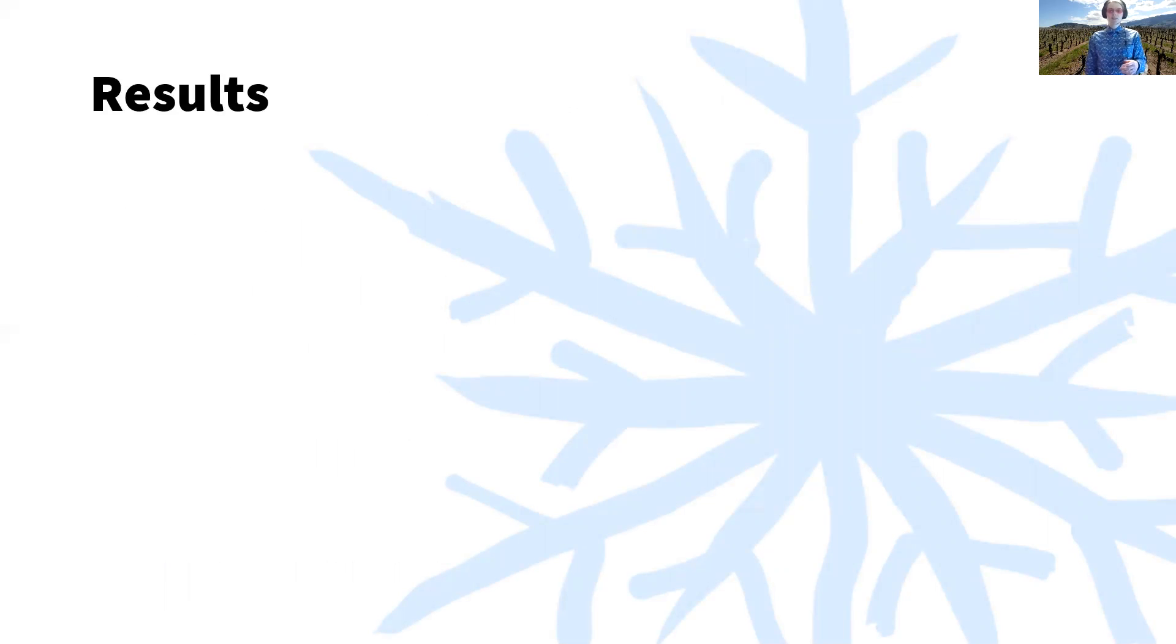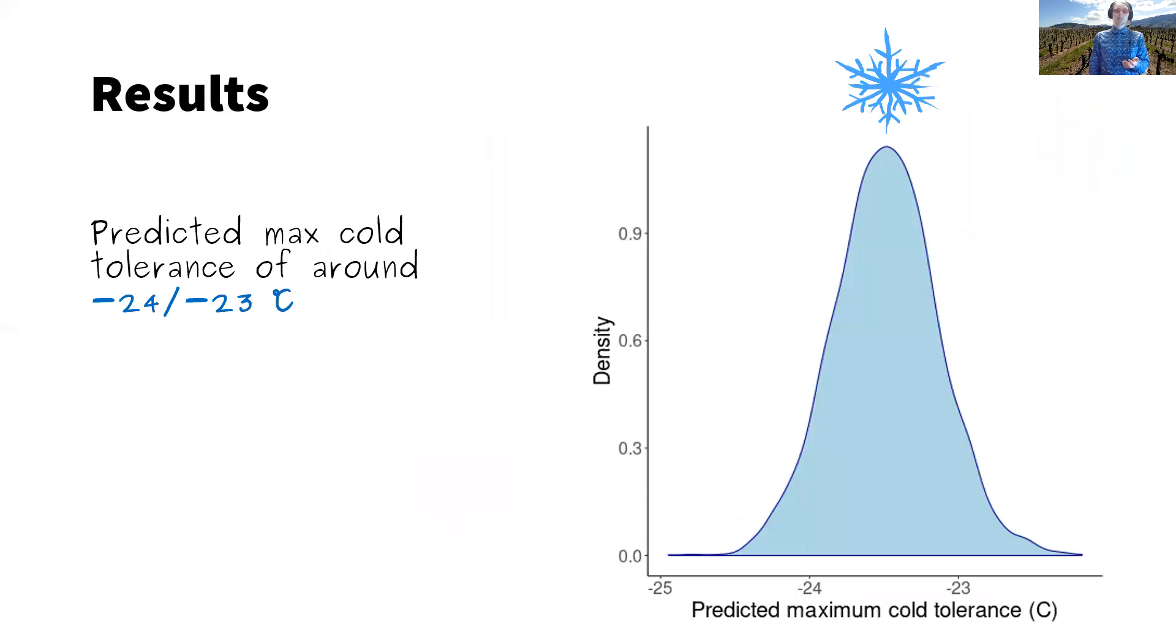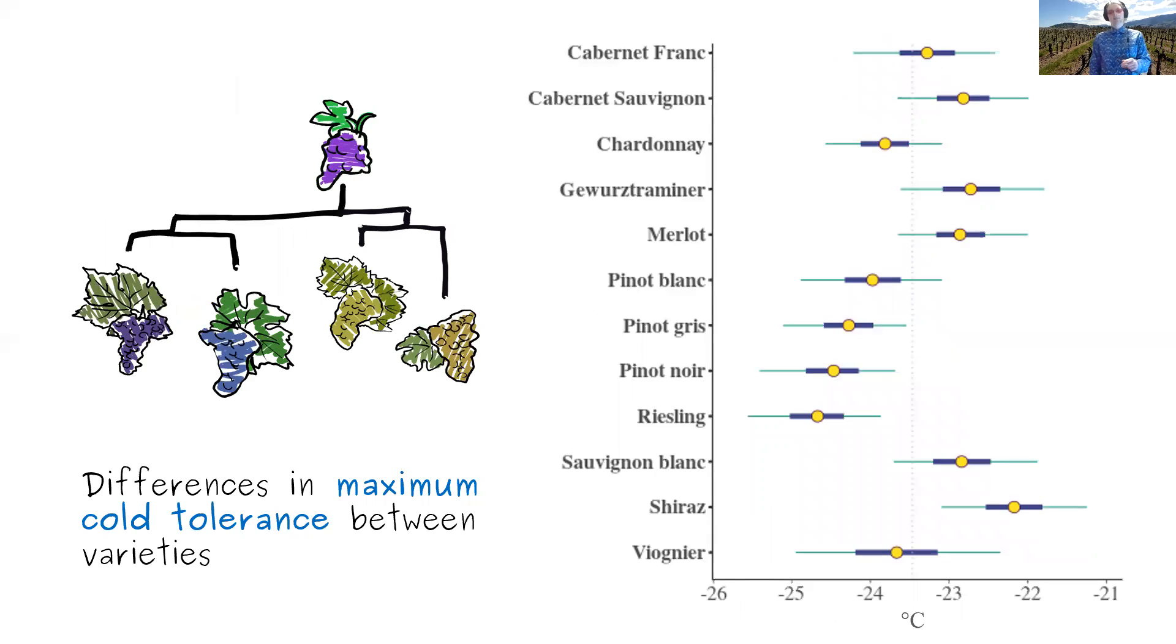So our results: good news is the model fit fairly well. The blue line in the middle here shows the mean prediction, and the darker blue ribbon around the line, that's a 95% credible interval for the mean cold tolerance. And then the lighter blue ribbon is the 95% credible interval for the whole data, including the effect of site and variety. And the model predicts maximum cold tolerance of around minus 24 to minus 23 degrees on average for a wine grape.